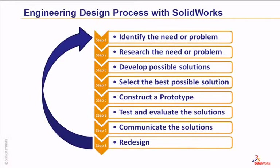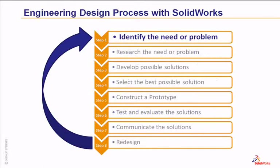The engineering design process is a series of iterative steps that engineers and designers take to solve a problem. The engineering design process consists of eight steps, each addressing different questions regarding the overall design. Step 1 is to identify the need or the problem. You need to ask yourself what problems exist in society that can be solved with engineering and what processes can be improved through engineering.